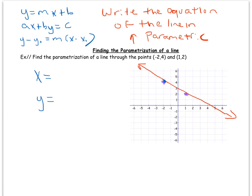I like to use an analogy — pretend there's a spider at the point negative two, four. As it moves along the line, let's track how the x-coordinate is changing.